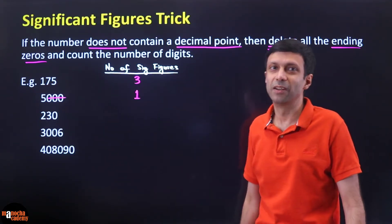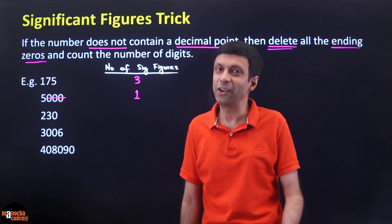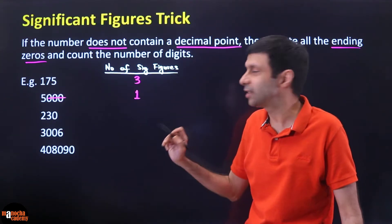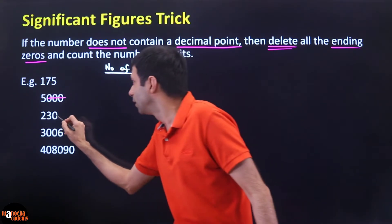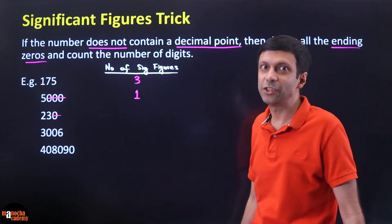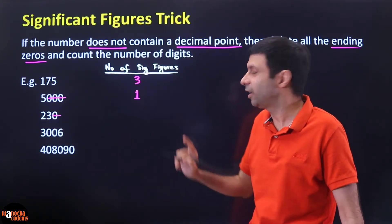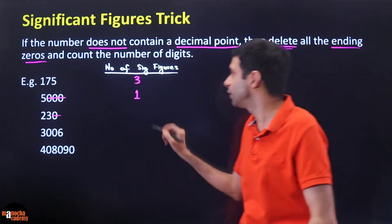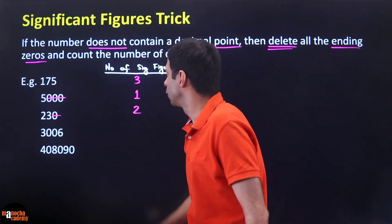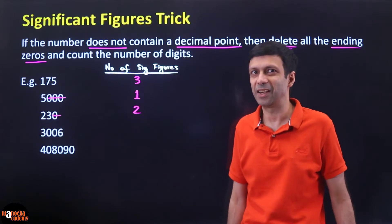What about 230? Again, look at the ending zeros — there is only one zero. Strike that out. How many digits are left? 2 and 3. So only two digits remain, meaning the number of significant figures is 2.